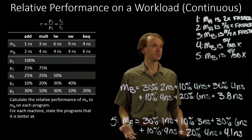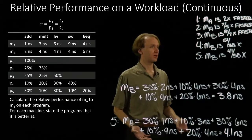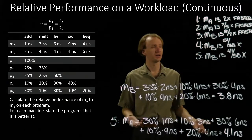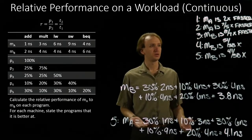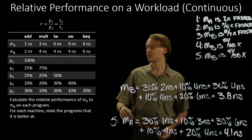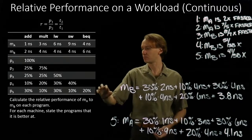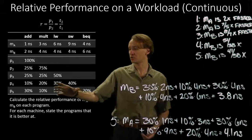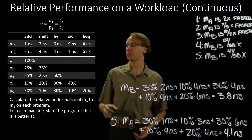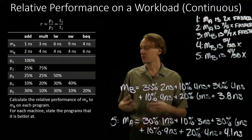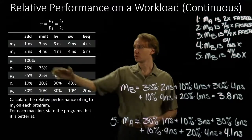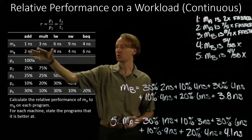We could also use this to inform a purchasing decision. If you know you'll be running lots of programs with a strong memory component, you probably want machine B. If you'll be running lots of programs with a large arithmetic component, then you'll probably want machine A instead.